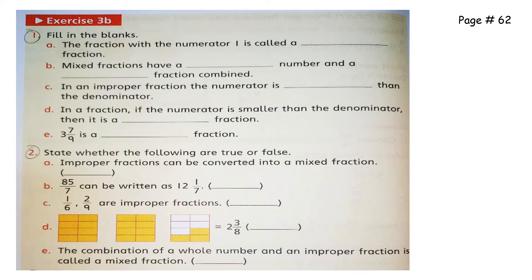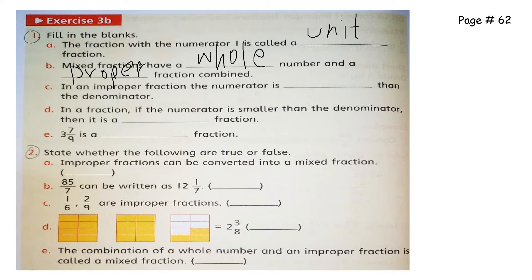Now the questions start on page 62. Question 1: the fraction with numerator 1 is called a unit fraction. Mixed fractions have a whole number and a proper fraction combined. In an improper fraction, the numerator is greater than the denominator. In a proper fraction, the numerator is smaller. And this given example is a mixed fraction.